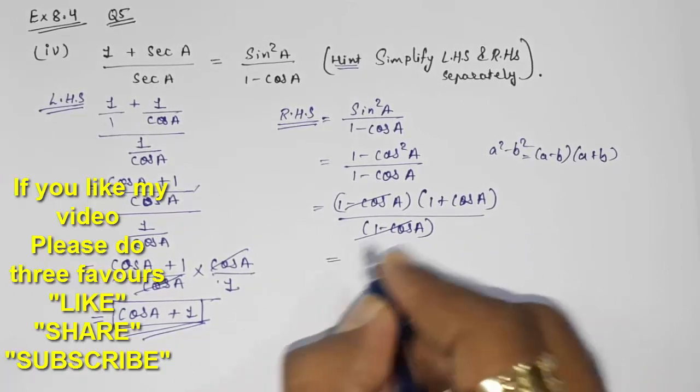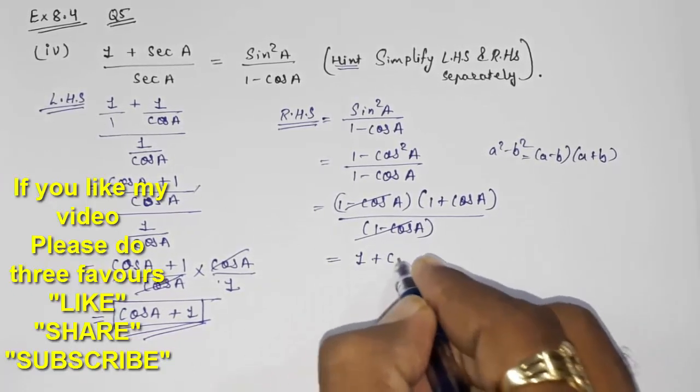So here also both this will get cancelled and for RHS that will be 1 plus cos A.